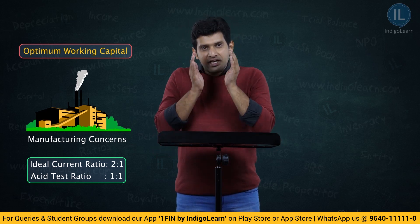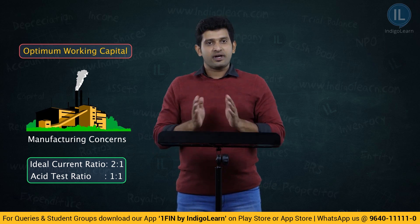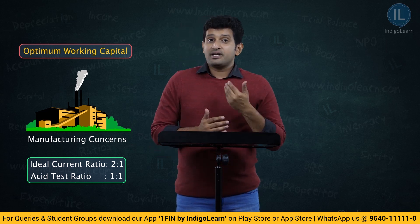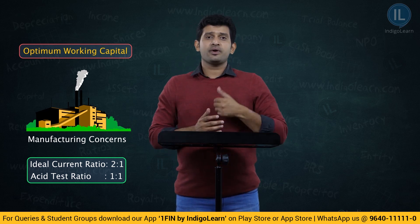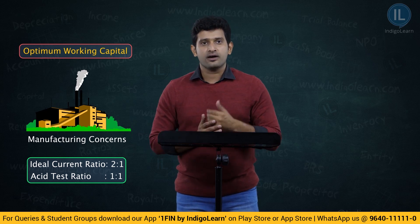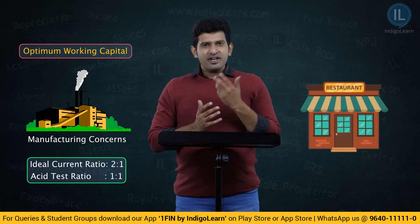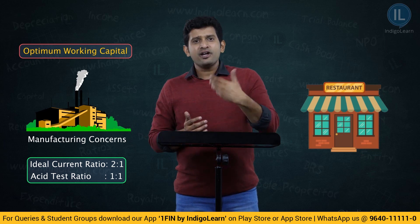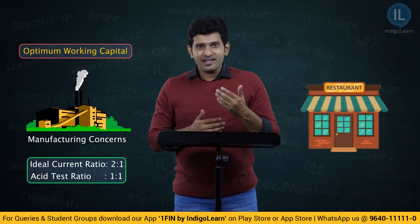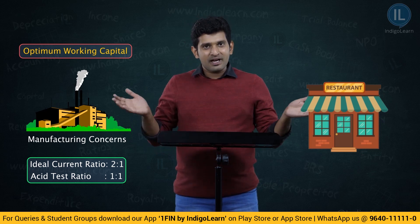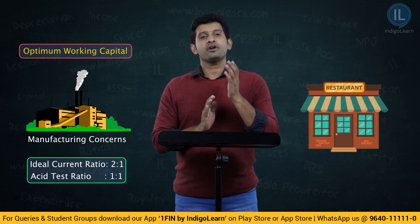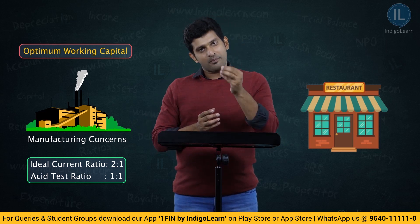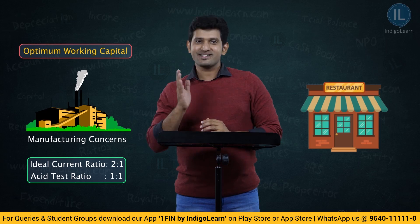But please trust me — having exactly 2:1 does not mean it is the optimum for every business. There may be companies or industries where even 2:1 is not required. For example, if you take a restaurant business, today you purchase raw material and by end of the day you generate sales. It happens so rapidly, there is no time lapse at all. Therefore, it all depends upon the nature of the business as to what has to be the optimum current ratio or acid test ratio.